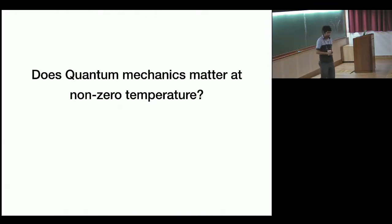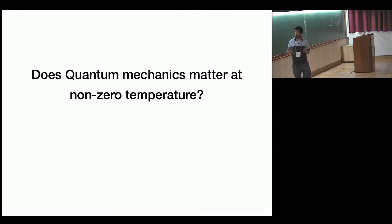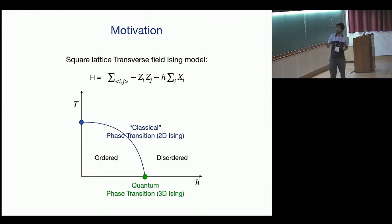The motivation for this talk: does quantum mechanics matter at non-zero temperature? Take the example of the transverse field Ising model on a square lattice. This is its phase diagram. The quantum critical point is 3D Ising universality class, and the finite temperature transition is in the 2D Ising universality class—often called a classical transition because its universality class is the same as that of a completely classical Ising model.